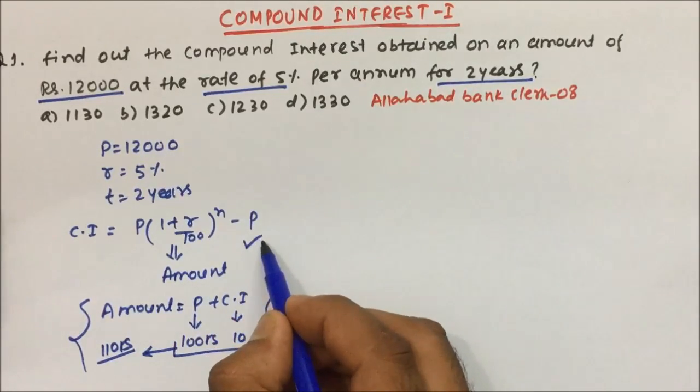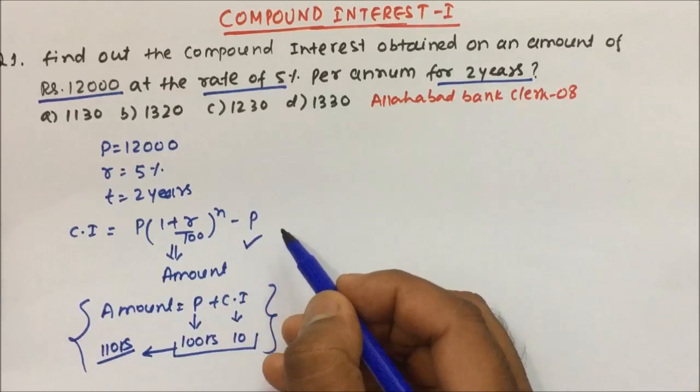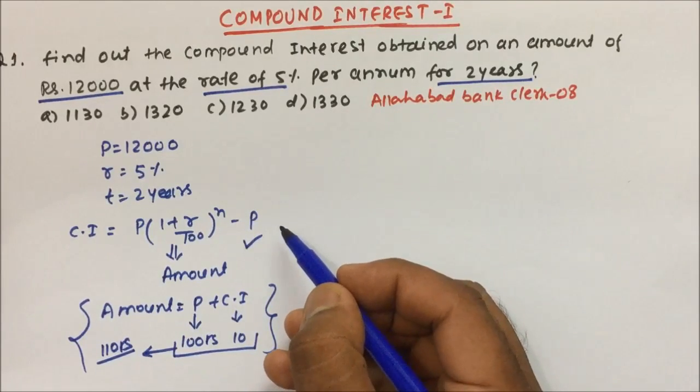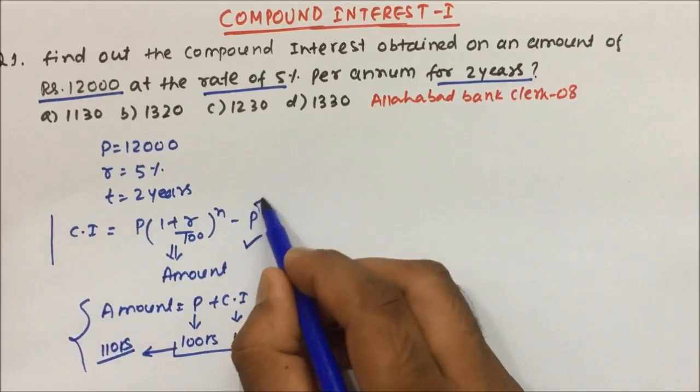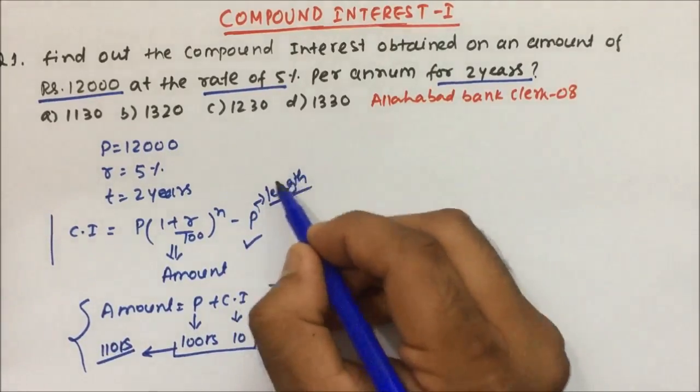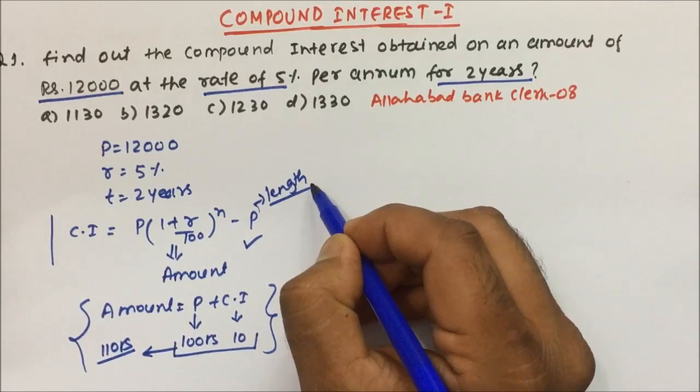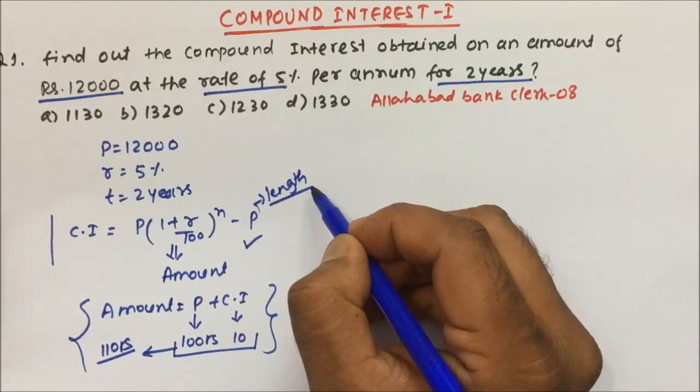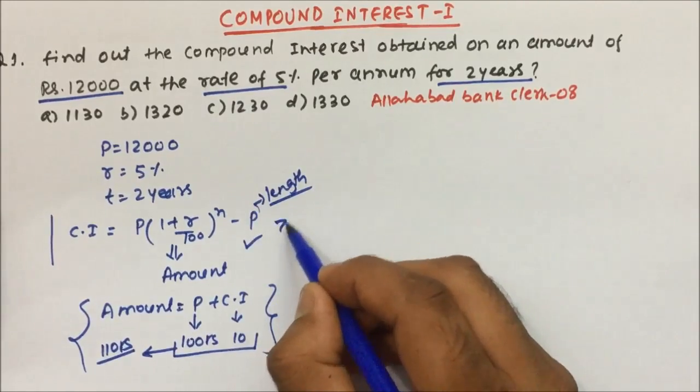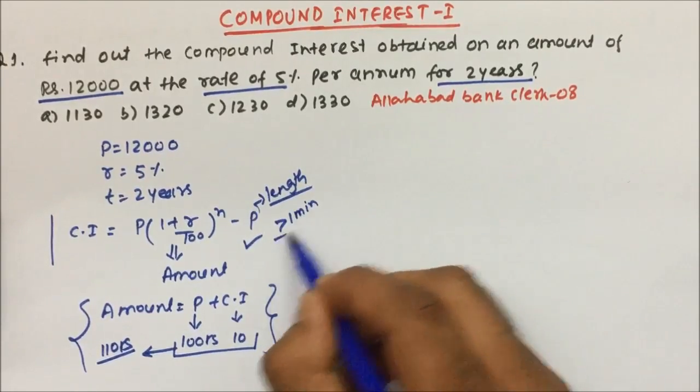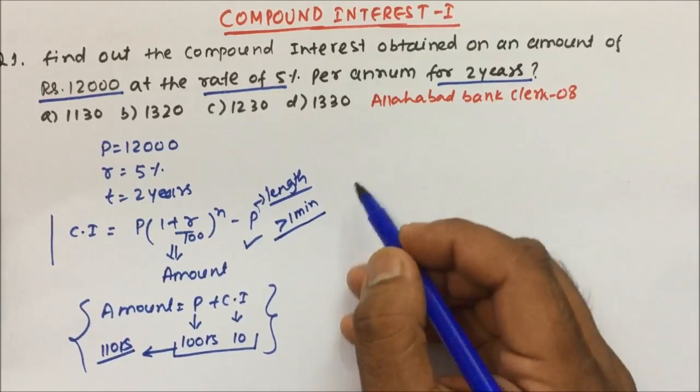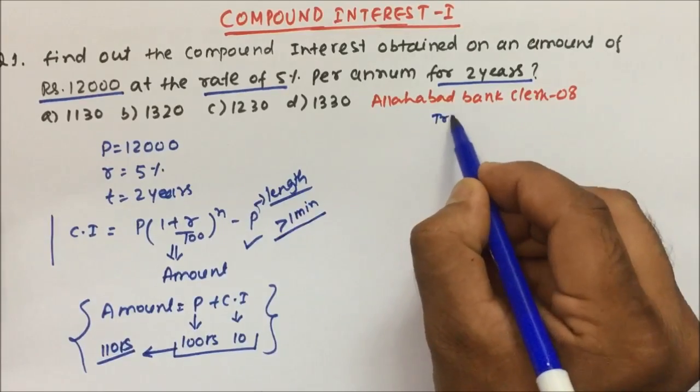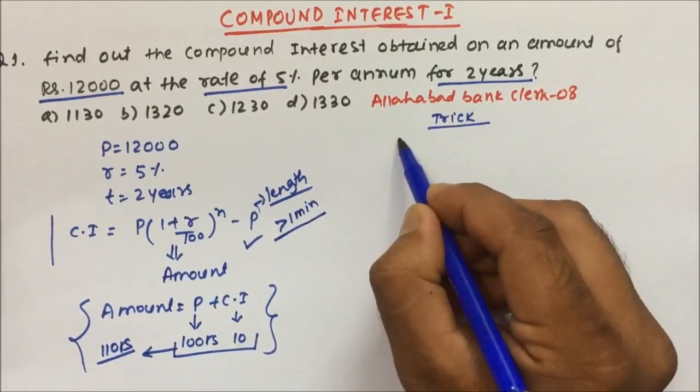So this was the formula which we are using in our childhood or maybe you can say in class 10th or class 8th. But now we cannot use this formula because this formula is too lengthy. If you use this formula, the calculation will be too lengthy. And in maths, if you want to save time, we should know the shortcut technique to solve this kind of problems, otherwise it will be taking more than one minute and you will not be able to clear any of the exams. So let's understand what is the formula or what is the trick to solve the question of compound interest.